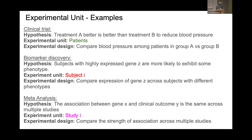So what is an experimental unit? Before I define it, let's look at some examples. A clinical trial: the hypothesis is treatment A is better than treatment B to reduce blood pressure. What's the experimental unit? Patients. We compare blood pressure among patients in group A and group B. Biomarker discovery: the hypothesis is subjects with highly expressed gene Z are more likely to exhibit some phenotype. What's the experimental unit? A subject. Meta-analysis: the hypothesis is the association between gene X and clinical outcome Y is the same across multiple studies. What's the experimental unit? A whole study.